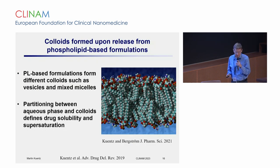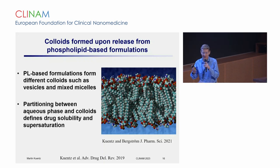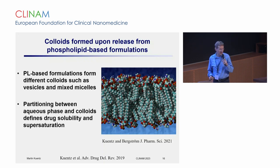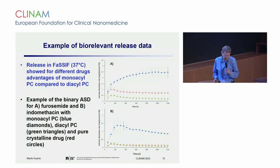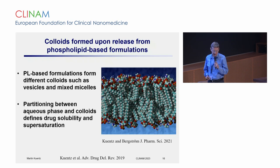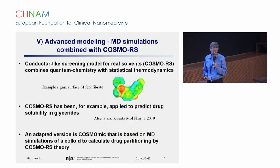Then of course you have the colloids that are formed. It's very complex what you get in the GI tract, because what I showed was in biorelevant media — fasted-state simulated intestinal fluid — so there are also bile salts and taurocholate as part of the FaSSIF. They interact and form mixed colloids together, and these define how much supersaturation is achieved in the end with these systems.